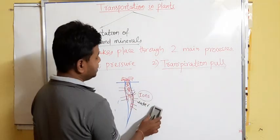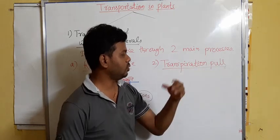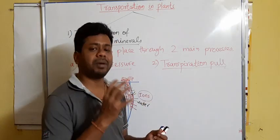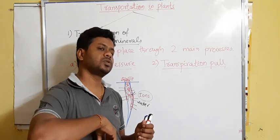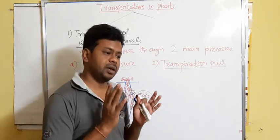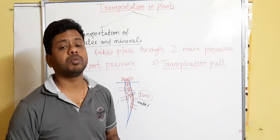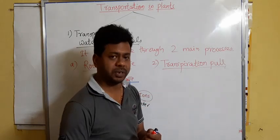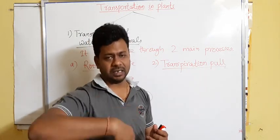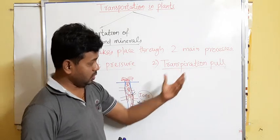Now we will read about transpiration pull. As the name suggests, transpiration is a process by which the extra water of the plant goes through the stomata in the form of water vapor. Transpiration is a process by which water in the form of water vapor goes through stomata of the leaves. This process is called transpiration, and this transpiration actually creates a pull — a suction pressure — which helps the water to move.